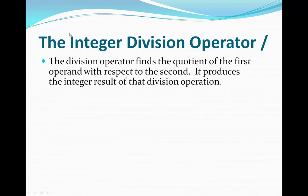The integer division operator is the slash operator, and its purpose is to find the quotient of the first operand with respect to the second operand. It is a binary operator, which means it takes two operands — one to the left and one to the right of the slash — and it produces the integer result of that division operation. So what does that mean, the integer result of the division operation?